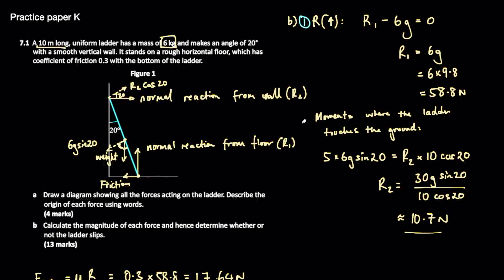For these types of questions you're likely going to want to take moments around a certain point. It's fairly important that you pick a correct point. In this example, because we wanted to find the normal reaction from the wall and already knew the weight, we took moments around the point where the ladder touches the ground — because it eliminates that force, giving an equation with one variable to solve. There are two or three marks just for doing that process, so by doing two of these things you've potentially picked up half the marks without even reaching the final answer.